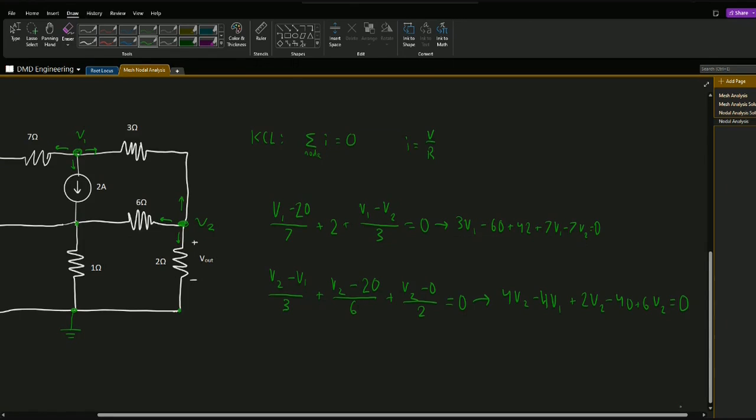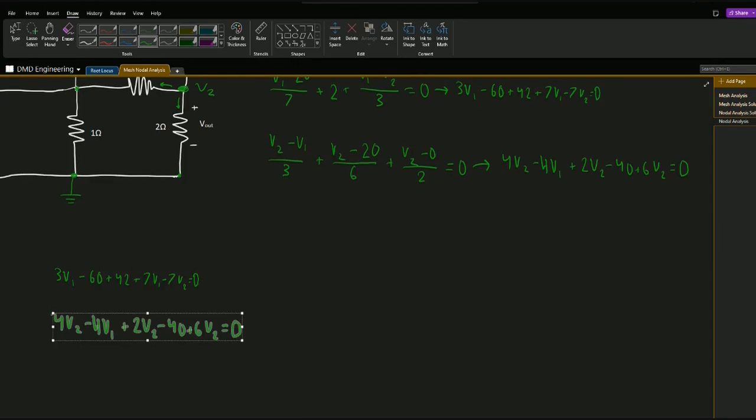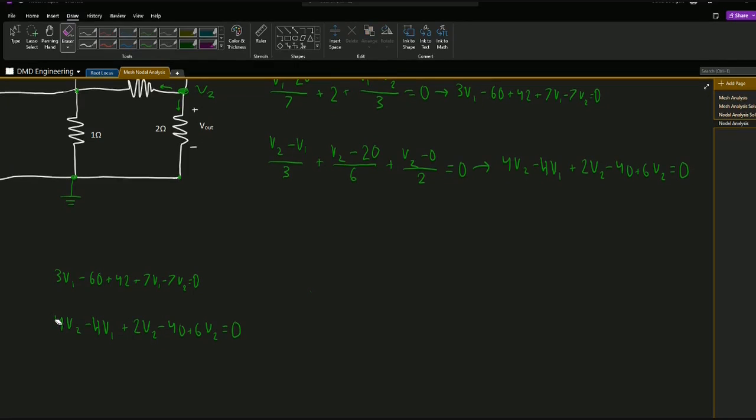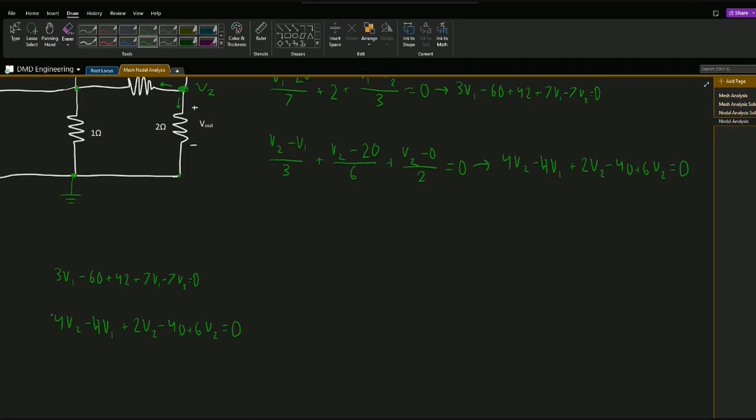Now we have two equations and our two unknowns are v1 and v2. We have the same number of equations as unknowns, so we can go ahead and solve. Let me copy these down here. I'm going to write these out in matrix form so that way we can easily solve using a calculator. I know we have two equations two unknowns, so we'll have a two by two matrix, then we'll have our unknown matrix which will be two by one and our constant matrix which will be another two by one vector.